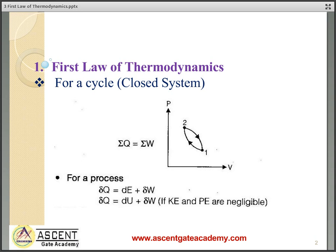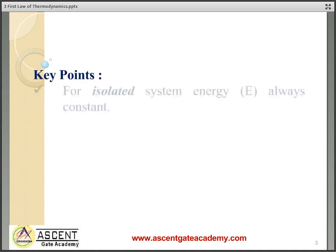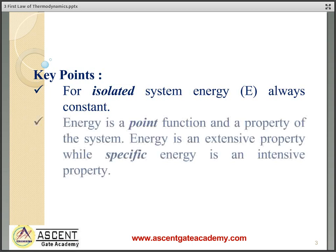For any change of state, dQ (transfer of heat) is equal to dE plus dW, where dE is the total change in energy and dW is the work transfer. dE includes change in kinetic energy, change in potential energy, and change in internal energy. For a closed system, kinetic energy and potential energy can be neglected, so we consider only the internal energy dU. Therefore, for any closed system: dQ = dU + dW.